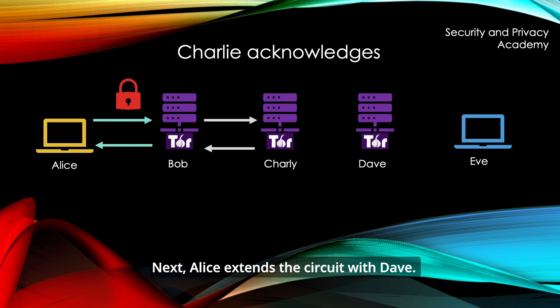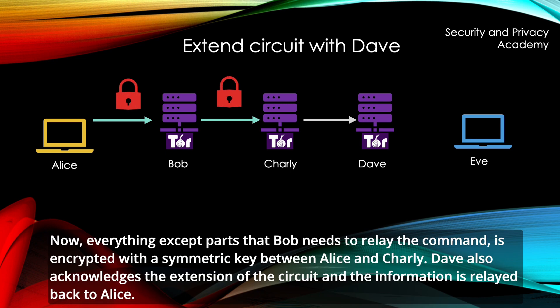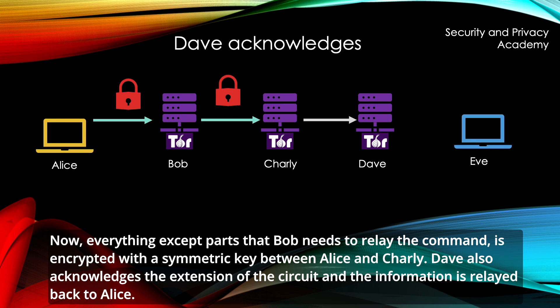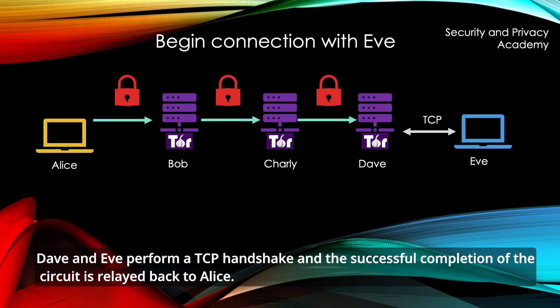Next, Alice extends the circuit with Dave. Now, everything except the parts that Bob needs to relay the command is encrypted with a symmetric key between Alice and Charlie. Dave also acknowledges the extension of the circuit and the information is relayed back to Alice. Finally, Alice can start the communication with Eve. Everything is now encrypted with the symmetric key between Alice and Dave, except for the parts Bob and Charlie need to relay information such as circuit IDs and commands. Dave and Eve perform a TCP handshake and the successful completion of the circuit is relayed back to Alice.